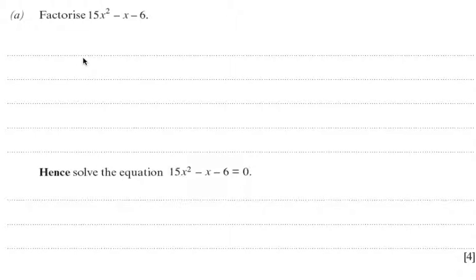Factorize 15x squared minus x minus 6. So first thing I want to do is I want to find factors of AC. So AC here, 15 times minus 6 gives us minus 90.